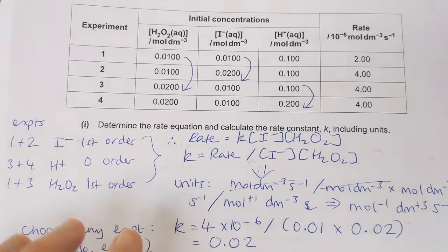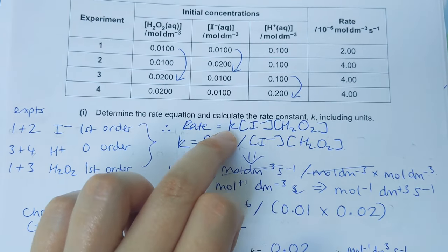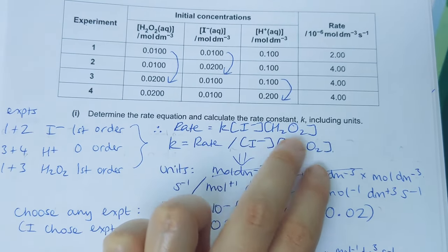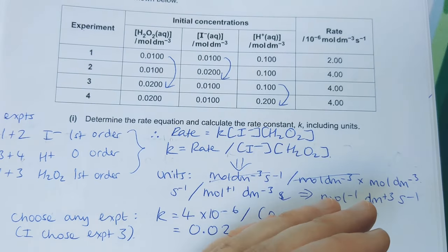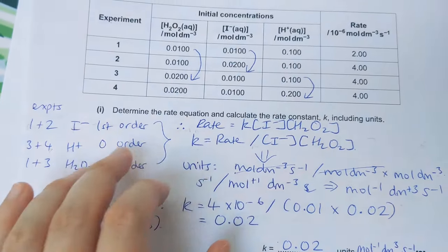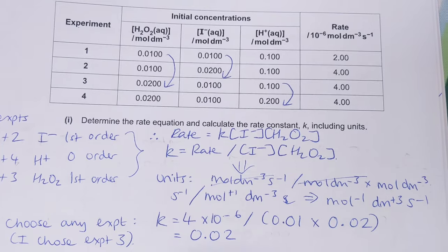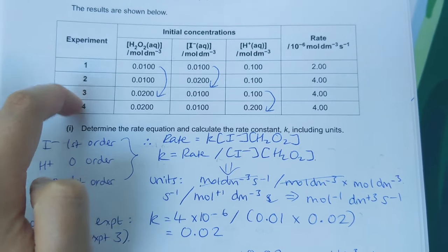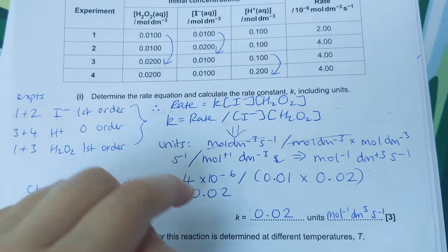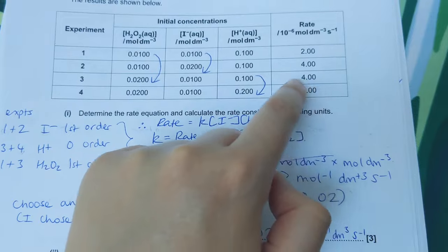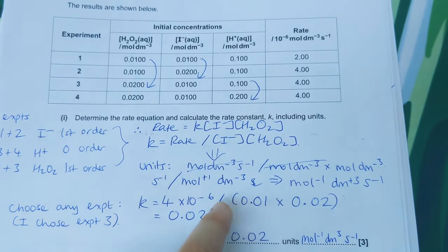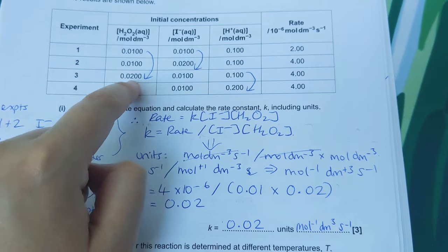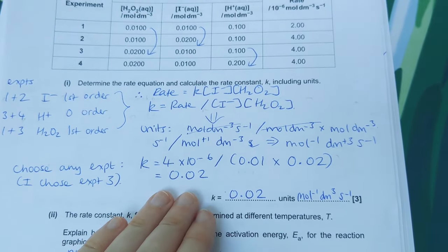Now we can write the rate equation: rate = k[I⁻][H₂O₂]. These are first order, so we include them; we don't need to show the power of 1. Anything zero order we don't include. We rearrange for k using values from experiment 3: k = (4×10⁻⁶) / (0.01 × 0.02), which gives a rate constant of 0.02.